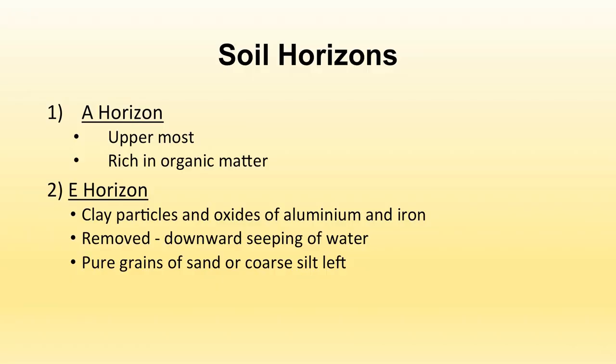The first horizon, A horizon, is the uppermost layer of the soil and it is rich in organic matter. The second is E horizon, which contains clay particles and oxides of aluminium and iron.